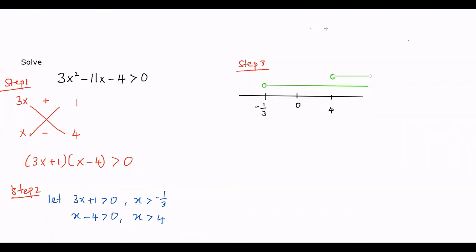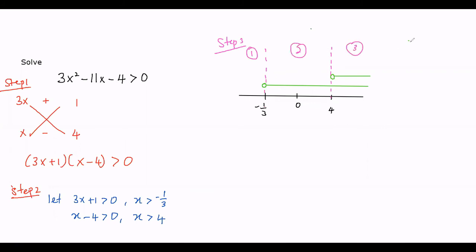Now we're going to split those regions. We draw dashed lines so we can see them clearly. This gives us the first region, the second region, and the third region. This is step 3, and now we're going to determine whether each region is positive or negative.